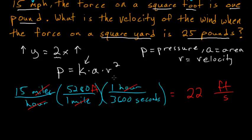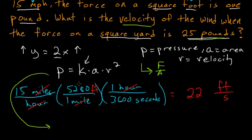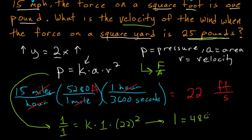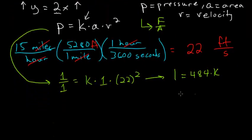So now that all of our units match, we can figure out what k is. And one thing to note is that pressure is force per area. So when figuring out what k is, we just use this equation. The pressure we're given is 1 pound over a square foot. So it's just 1 divided by 1. And this is equal to k times the area, which is 1, times the velocity squared, which we know is 22 feet per second squared. So therefore, when this simplifies, we have 1 is equal to 22 squared, which is 484 times k. So k is equal to 1 over 484.